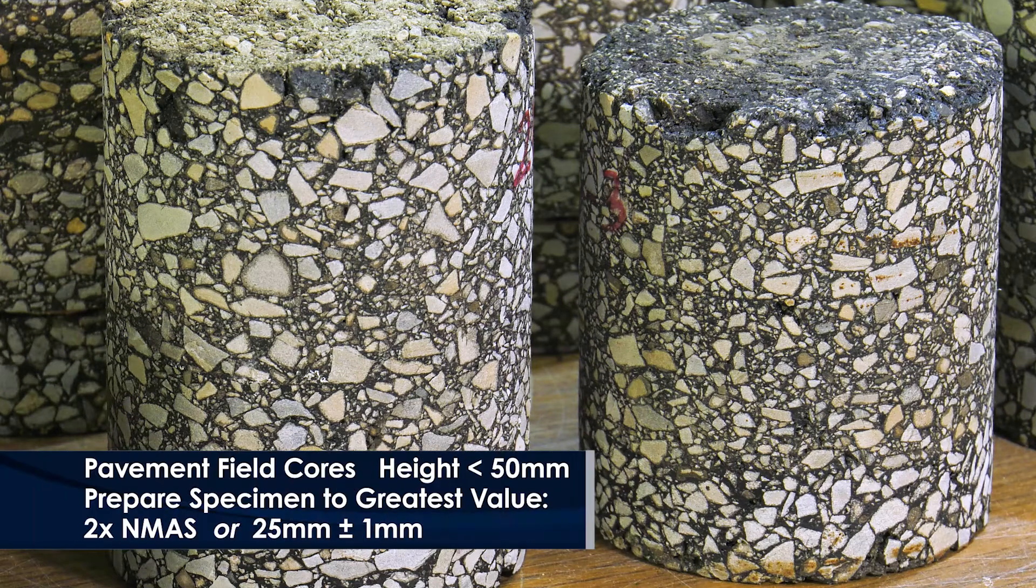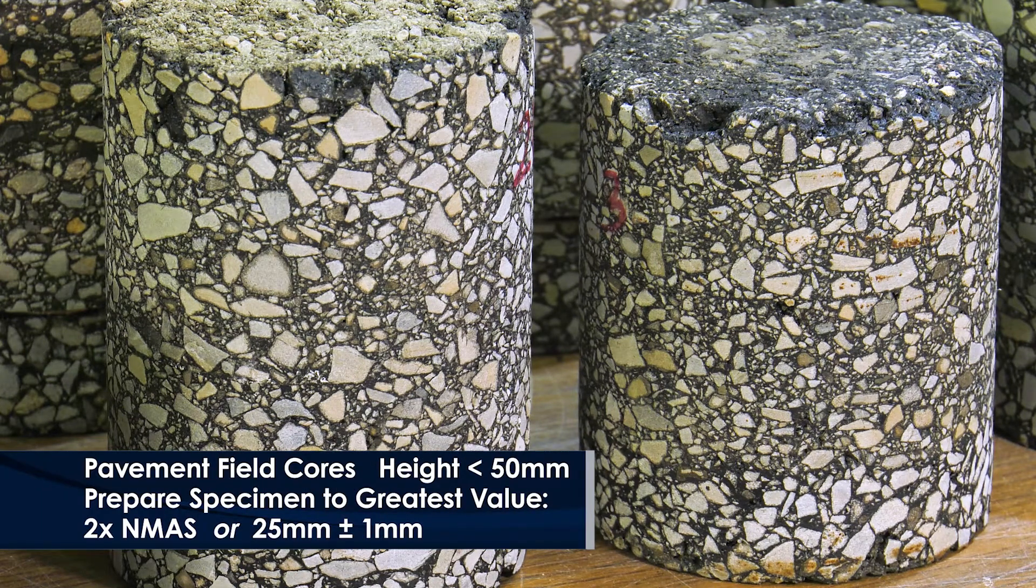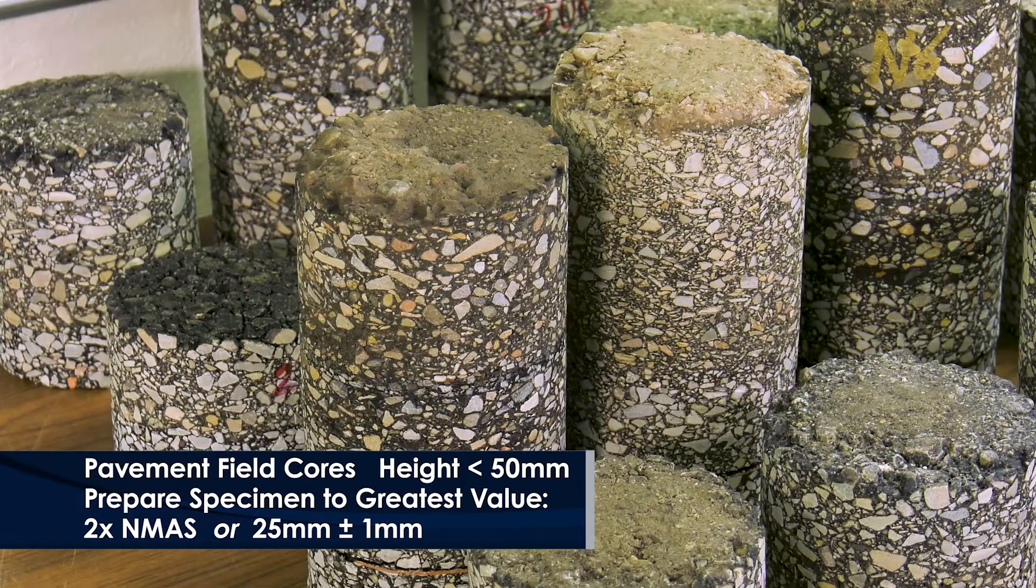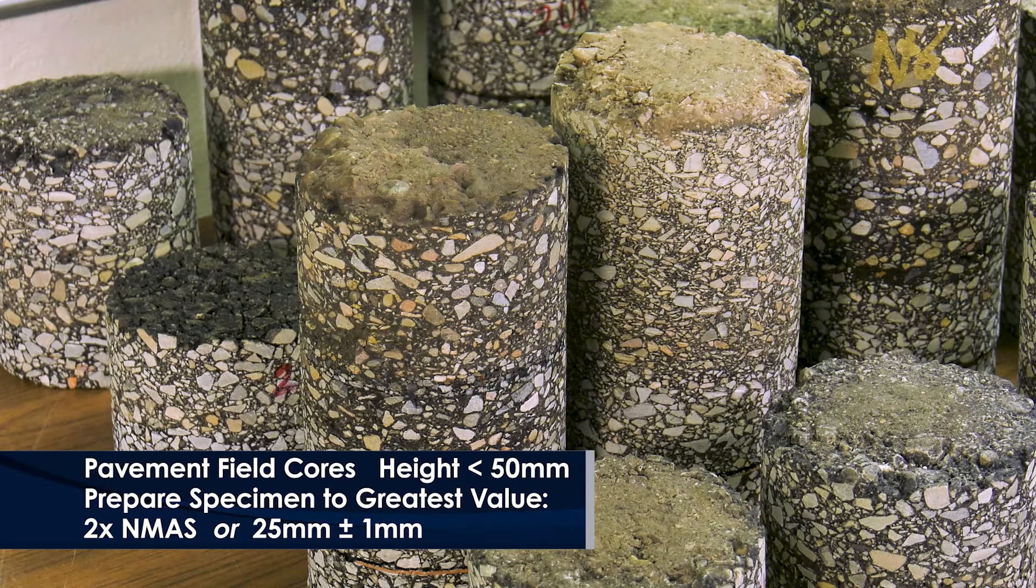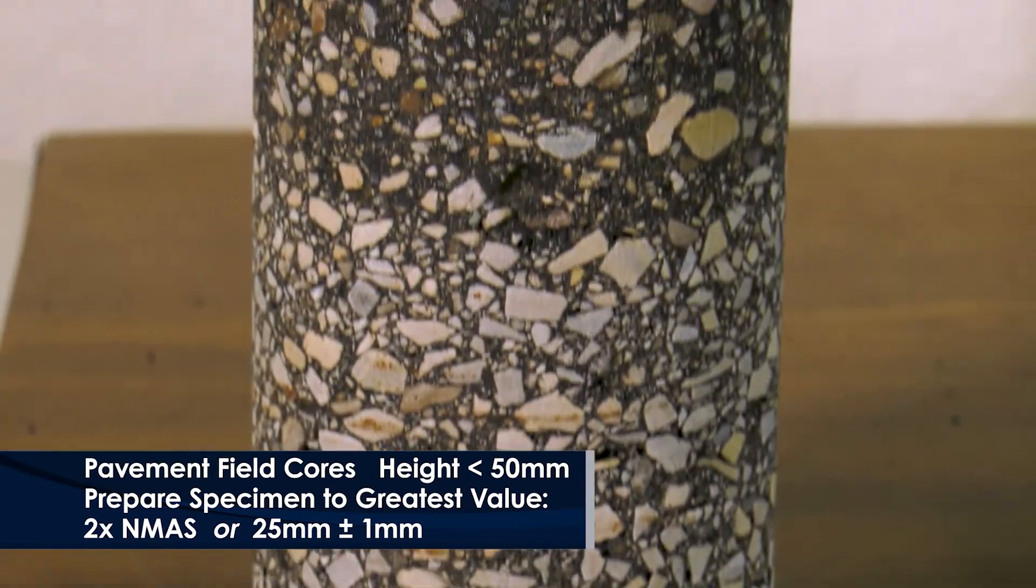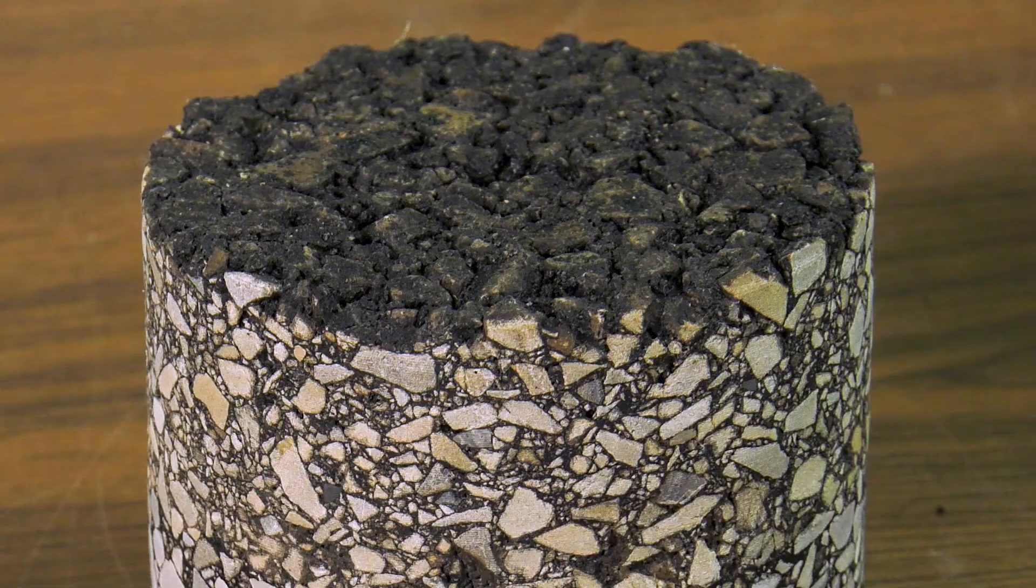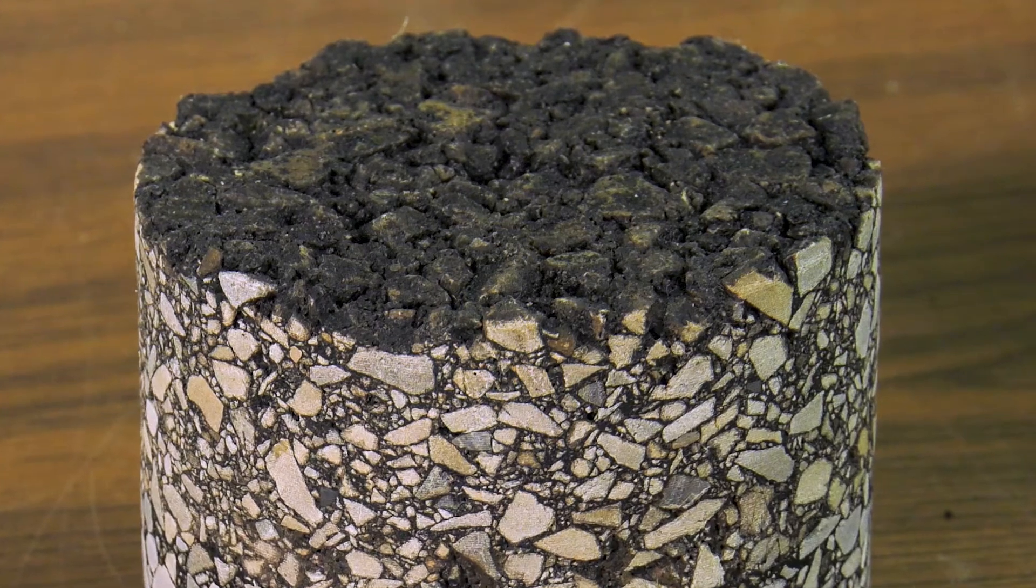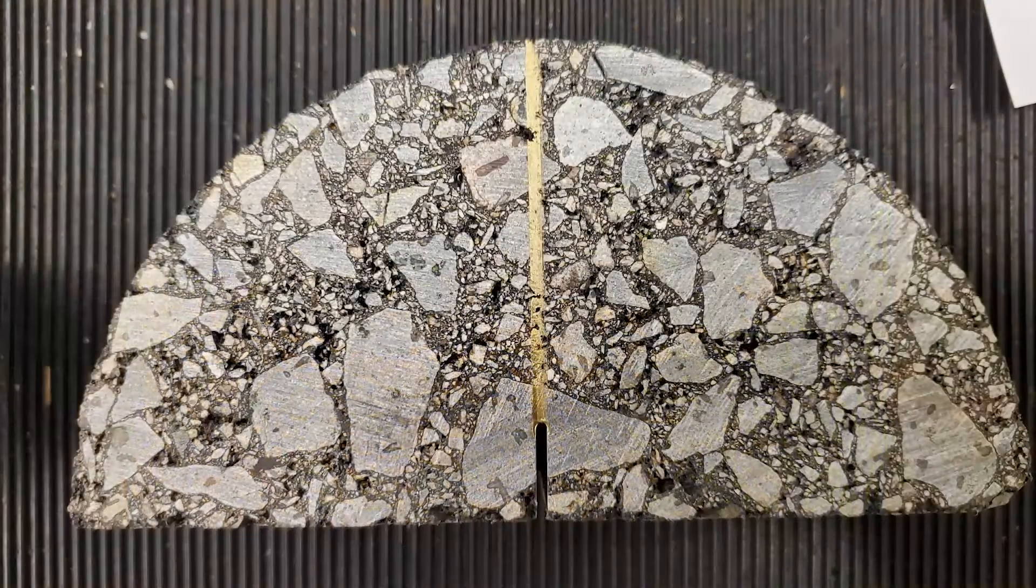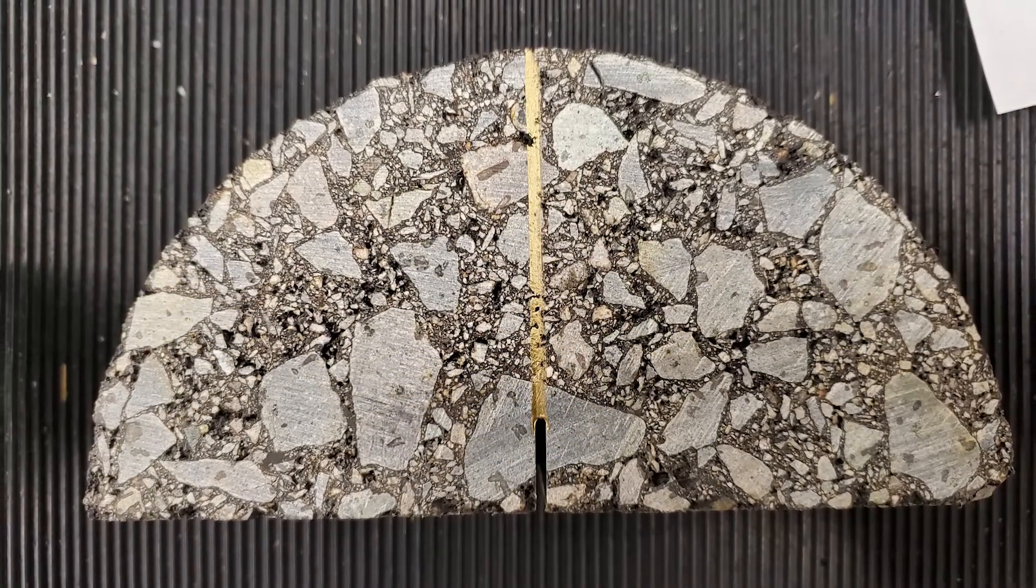For the pavement field cores, a test specimen with a diameter of 150 millimeters and a thickness of 50 millimeters should be used. If the core height is less than 50 millimeters, test specimens should be prepared as thick as possible but should not be less than the largest value of either two times the NMAS of the mixture or 25 millimeters. If the compacted surface of the core is intact, it can be used as one face of the test specimen. However, the other face should be trimmed parallel to the compacted surface with a wet saw.